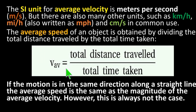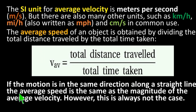Average speed is equal to total distance traveled over total time taken. If the motion is in the same direction along a straight line, the average speed is the same as the magnitude of the average velocity.